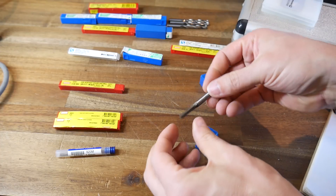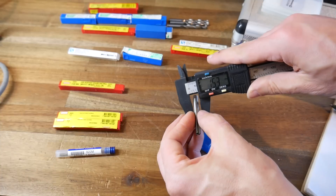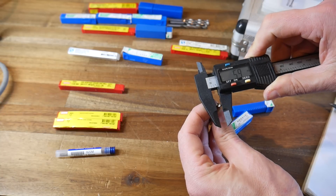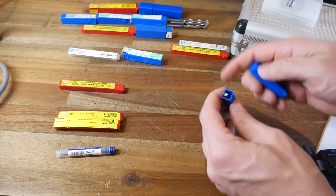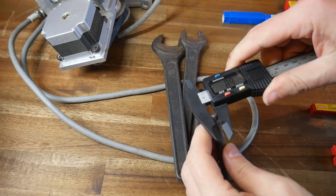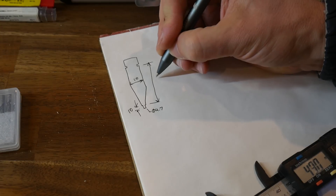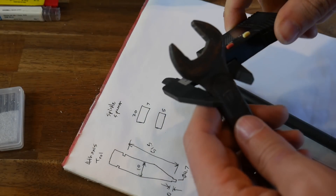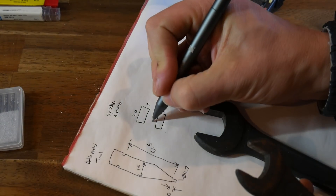As always we start by taking measurements, and in my case that also involves sorting all of the router bits by their external diameter. Calipers are definitely the best tool for this job, and if you don't own a set I have a link to an inexpensive set in the description. I had quite a lot to measure so I kept track of everything with a simplified diagram on a piece of paper. The more planning you do in this phase the less likely you are to make mistakes and require reprints later on.